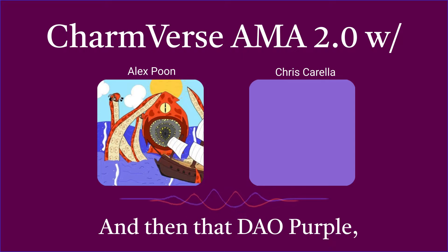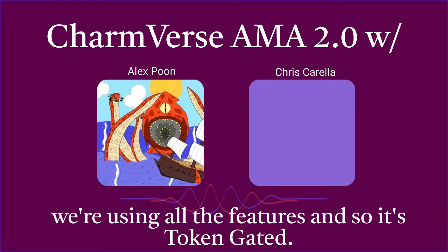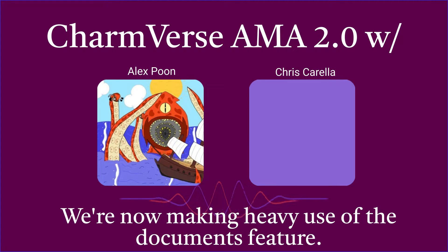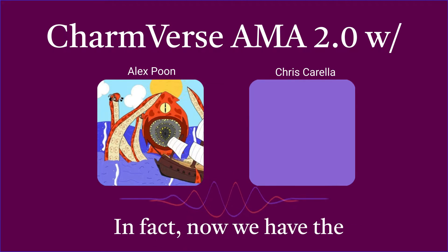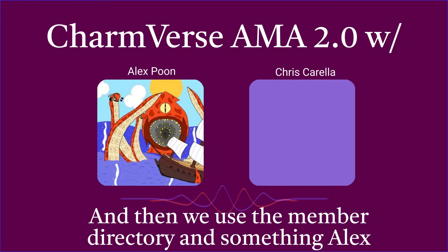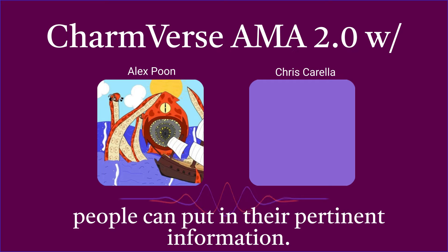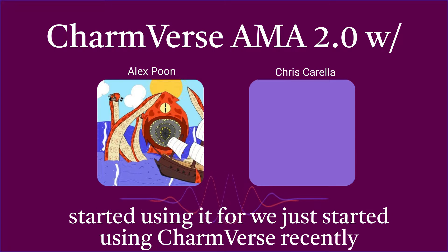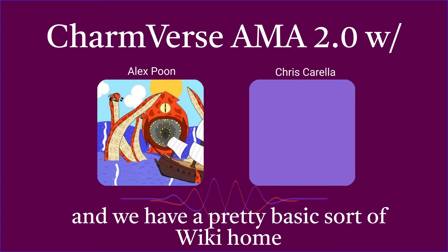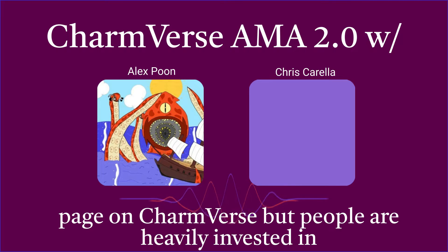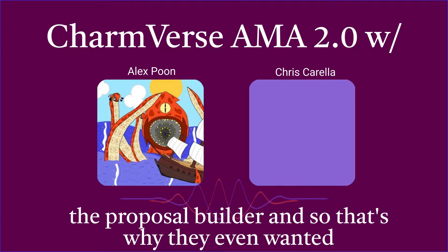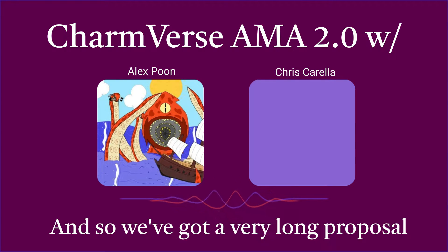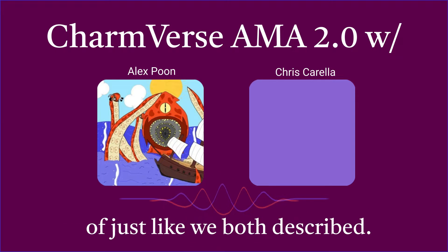In Purple we're using all the features — it's token gated, we make heavy use of the documents feature, we've had a great experience with proposals, and we use the member directory. To contrast that, SharkDAO just started using Charmverse recently. They have a pretty basic wiki homepage, but people are heavily invested in the proposal builder — that's why they even wanted to use Charmverse. We've got a very long proposal being workshopped by the group.